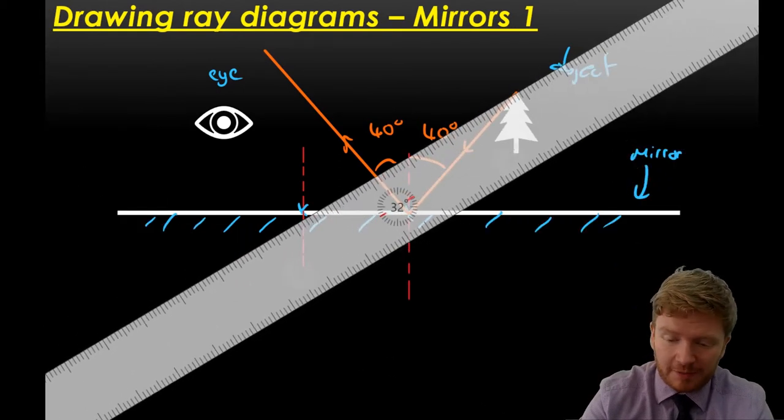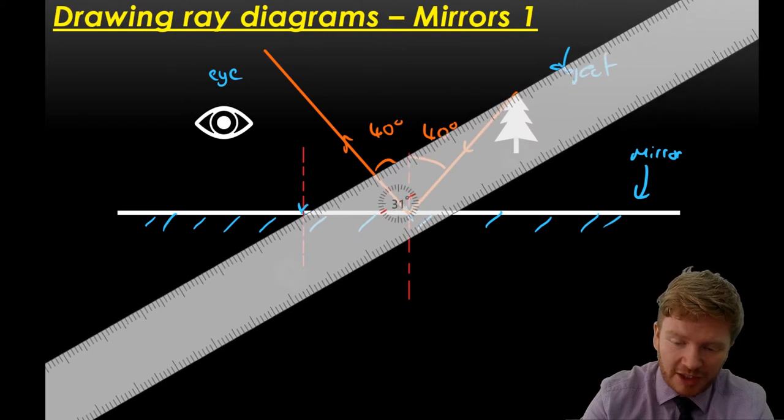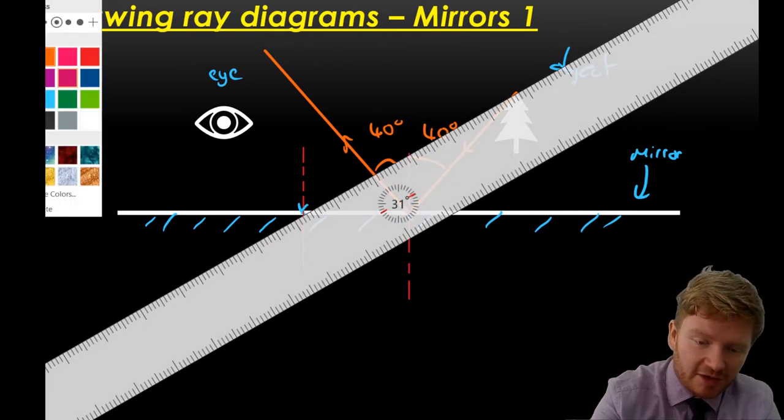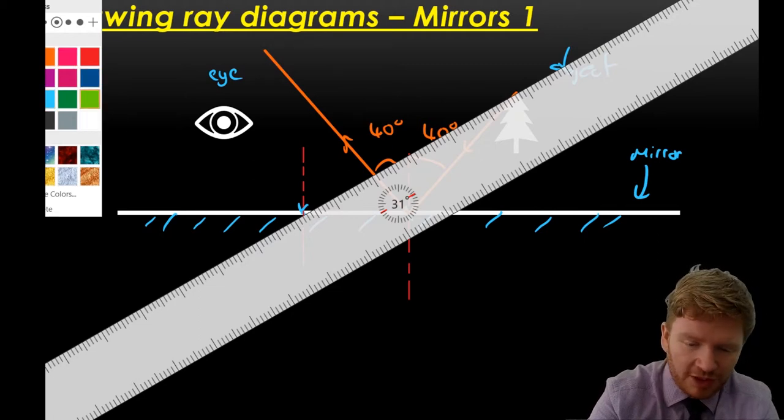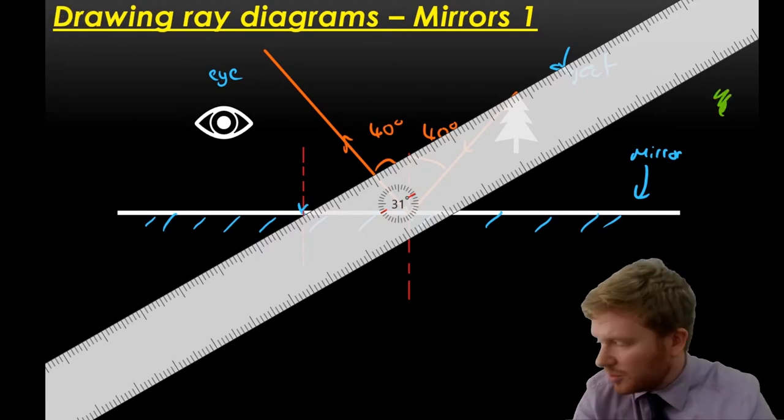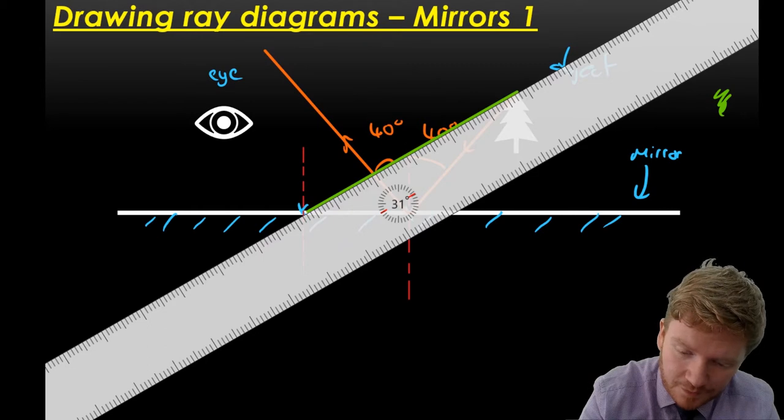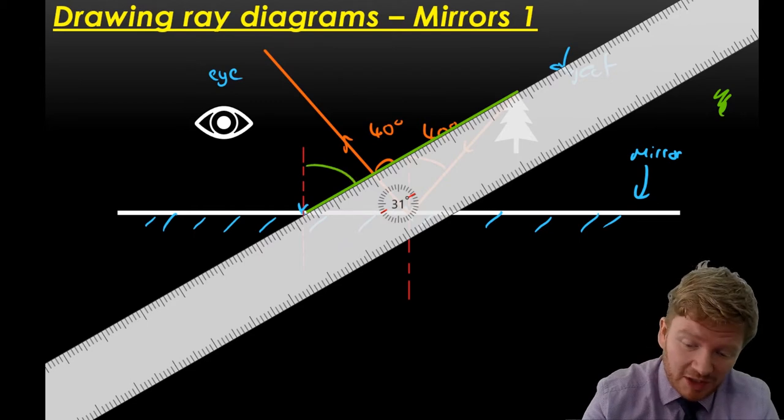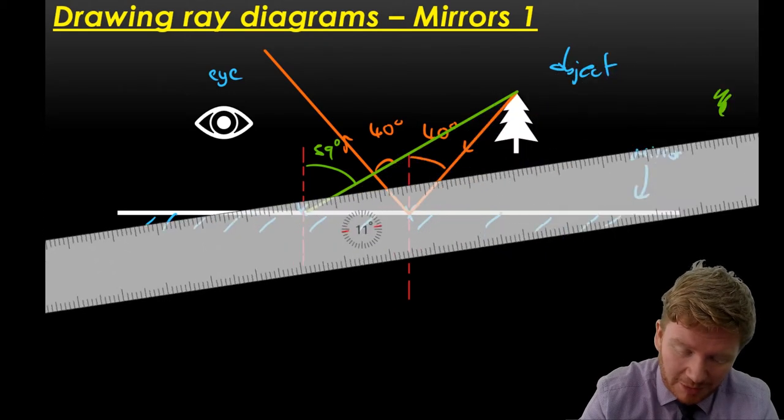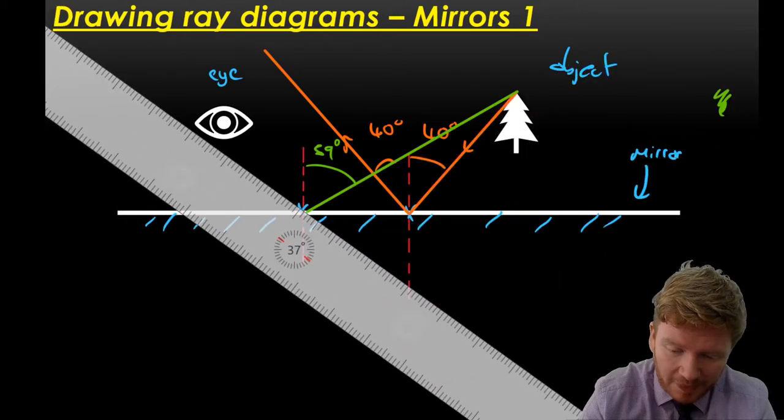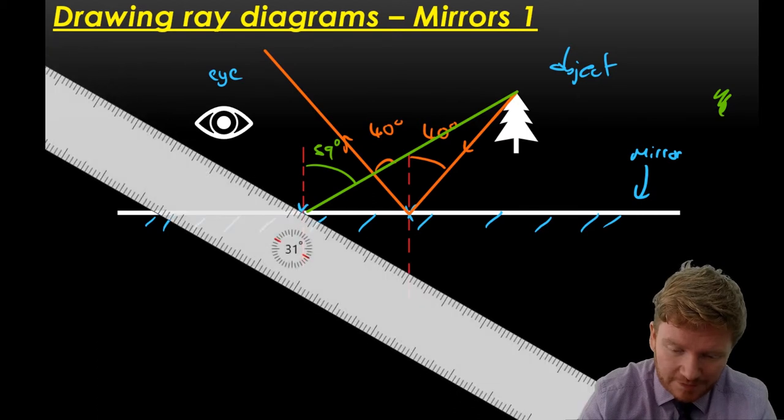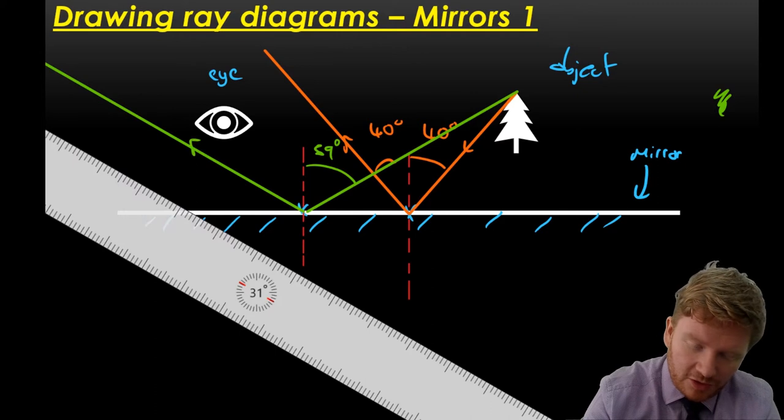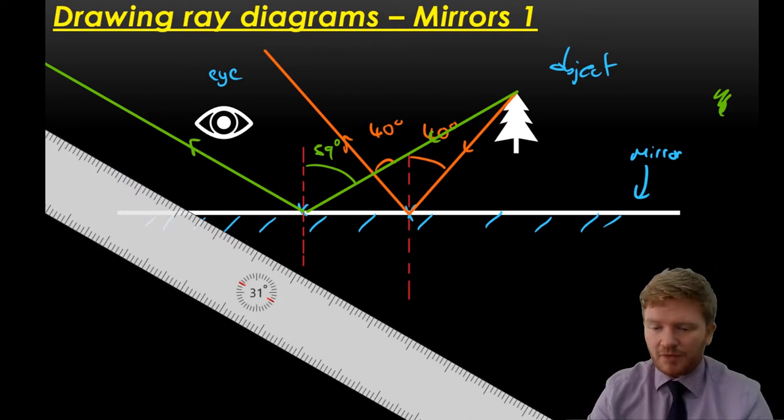Now I'll do exactly the same thing from the second. I'm going to use a different color here just to make it clear that this is a different ray. This is coming at 31 degrees to that. So that's going to be 59 degrees. And it's going to leave at the same angle again. So it's going to do something like that. So those are my two rays.